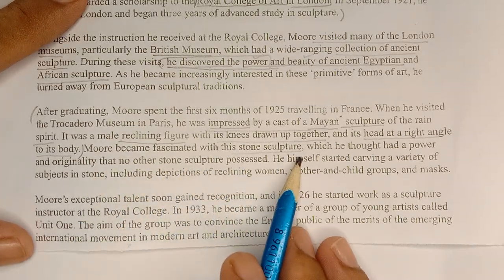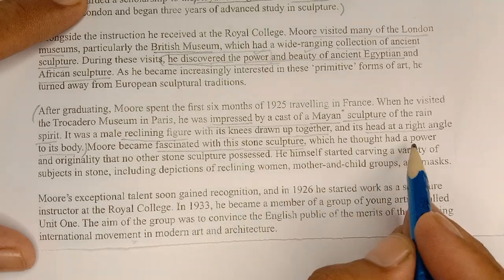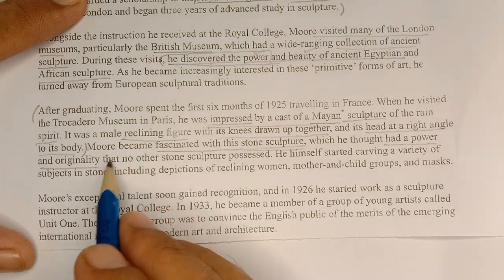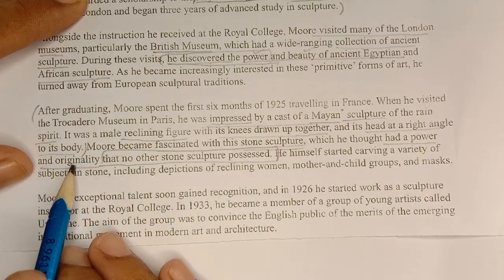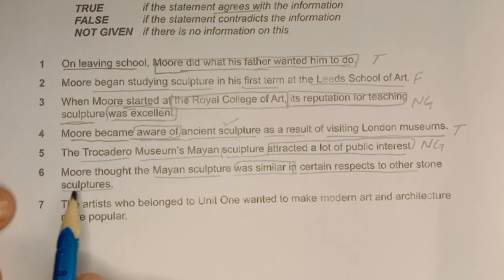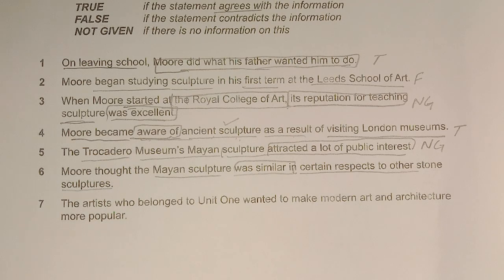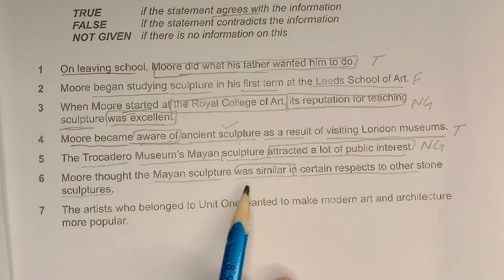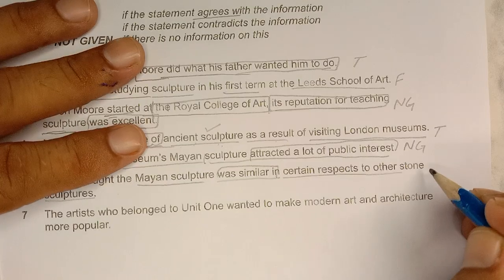Statement: 'Moore thought the Mayan sculpture was similar in certain aspects to other sculptures.' But the text says: Moore became fascinated with this strong sculpture, which he thought had a power and originality that no other stone sculpture possessed — meaning no other sculpture had those qualities. The statement claims similarity to other sculptures, but the text says the opposite — it contradicts. So this statement is FALSE.